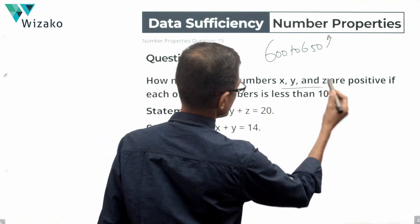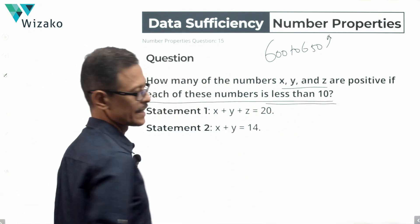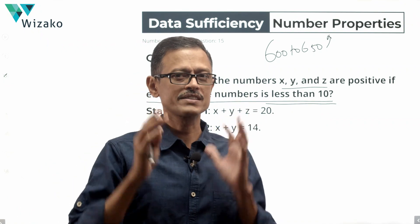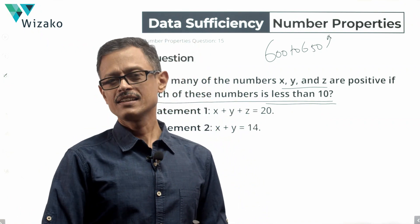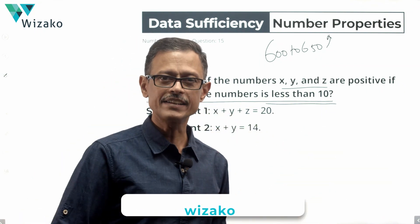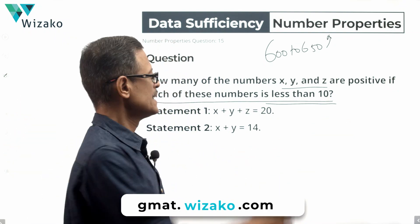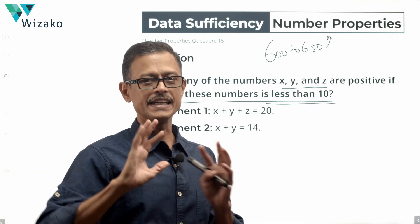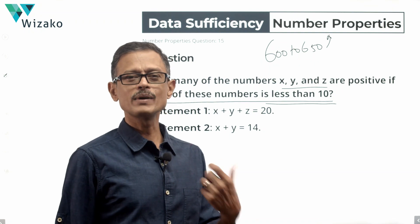How many of the numbers x, y, and z are positive, if each of these numbers is less than 10? So x is less than 10, so is y, so is z. All of the numbers are less than 10 — it could be 9.9, could be 3, could be 0. These numbers can take values that could be negative: minus 8, minus 2.34. All of these possibilities exist. No number can be 10 or greater than 10, and they need not be integers.